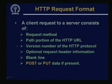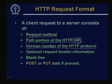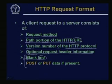An HTTP request from a client to a server consists of a request method (get, head, post, put, etc.), the path portion of the HTTP URL, the version number of the HTTP protocol, optional header information for some request methods, and — for methods that require additional data — that data is supplied after a blank line. The blank line acts as a delimiter between the header portion and the additional data. Some request methods like POST or PUT need additional data, while methods like GET do not.